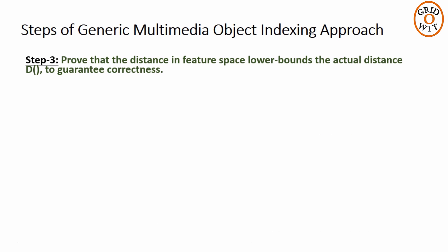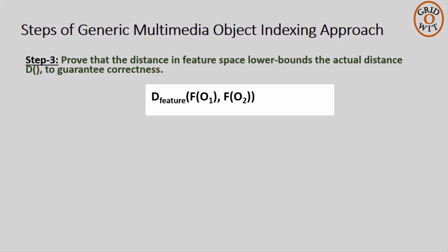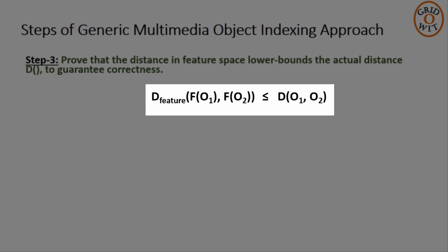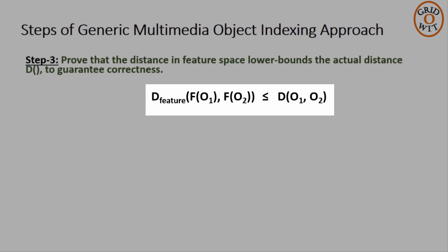Next step is to prove that the distance in feature space lower bounds the actual distance D. Because for fast searching instead of calculating actual distance, we will calculate distance considering less number of features. So we must prove its correctness. If D_feature represents the distance between the objects o1 and o2 in feature space, then it should always be less than or equal to the actual distance D between these two objects to guarantee correctness.